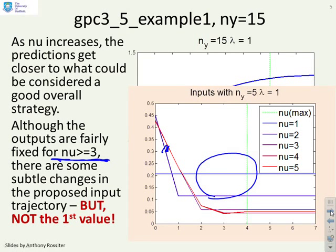If you look at the inputs that you're getting for this system, again you'll see nu equals 1, this prediction, nu equals 2, this prediction. But once you get to nu equals 3, 4, 5, you see that the first few values are pretty constant, and therefore increasing nu beyond that value makes little difference.